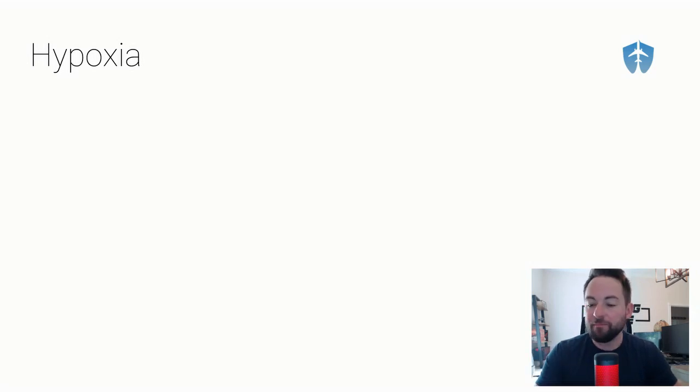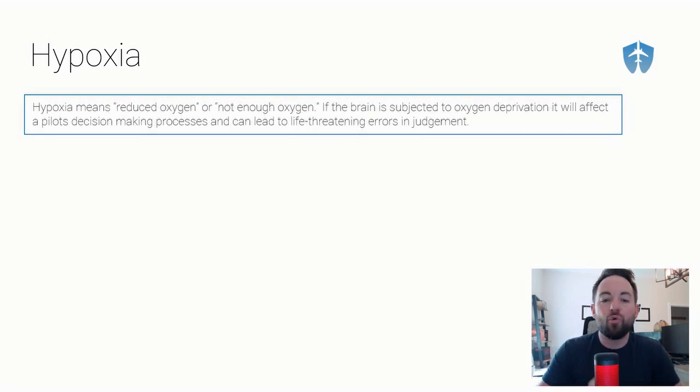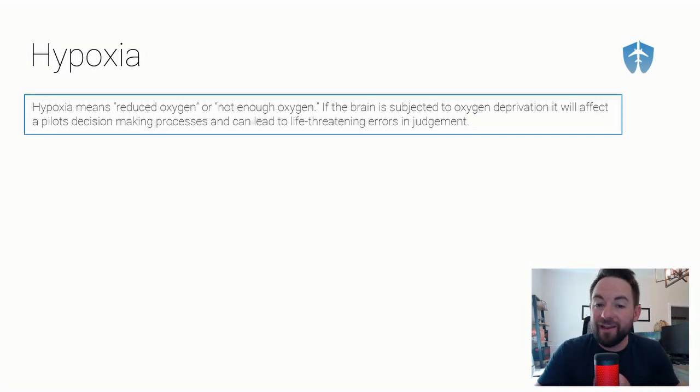Guaranteed you're going to have questions about these different types of hypoxia on both your FAA written test and your checkride — guaranteed they will be there. So let's break them down, make them simple, make it quick. Hypoxia — what is it? Hypoxia means reduced oxygen, or not enough oxygen.